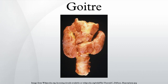Goiter was previously common in many areas that were deficient in iodine in the soil. For example, in the English Midlands, the condition was known as Derbyshire Neck. In the United States, goiter was found in the Great Lakes, Midwest, and Intermountain regions. The condition is now practically absent in affluent nations where table salt is supplemented with iodine. However, it is still prevalent in India, China, Central Asia, and Central Africa.